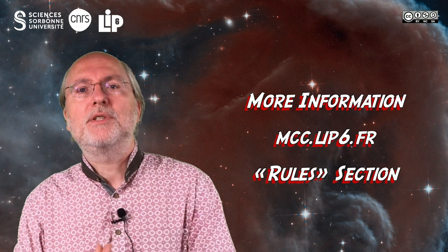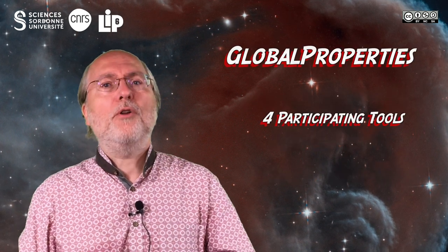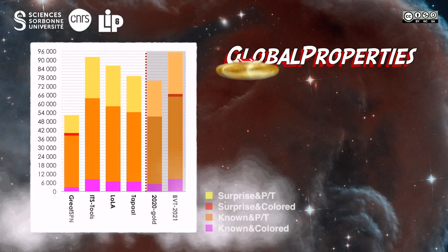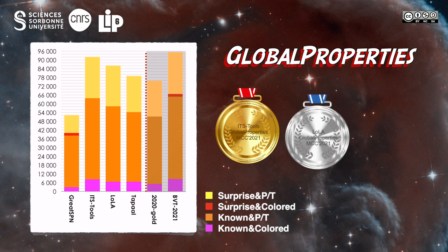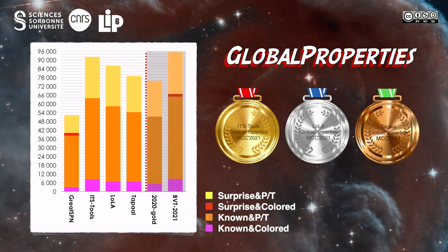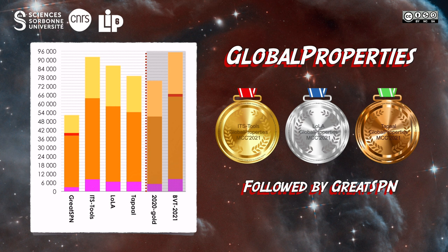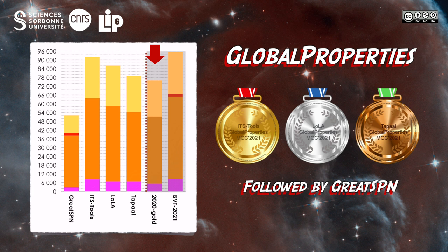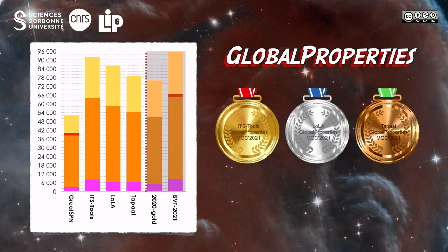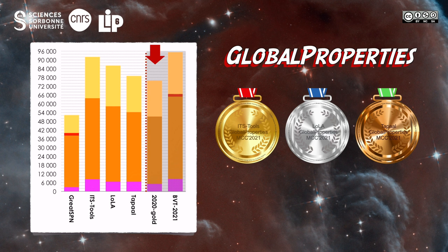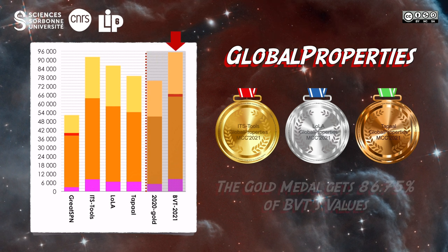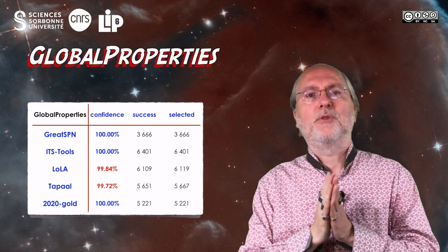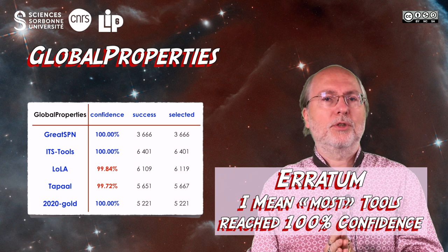The confidence rate is a way to estimate the confidence one can have in a tool. For the global properties family of examinations, four tools did participate. The gold medal goes to ITS-Tools, then Lola grabs the silver one, and TAPAL gets the bronze medal, followed by GreatSPN. The 2020 gold medal was TAPAL and would have been ranked fourth, meaning developers put a strong effort into this examination. BVT is just a bit better than the gold medal this year, and for this examination all tools reach a 100% confidence rate.